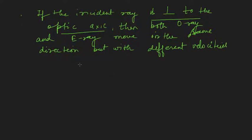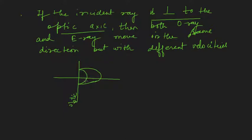Due to this, many interesting phenomena can be studied. The wavefront looks like this: we have the optic axis, and both the O-ray and E-ray are moving in the same direction but with different velocities. We will talk about these phenomena slowly.